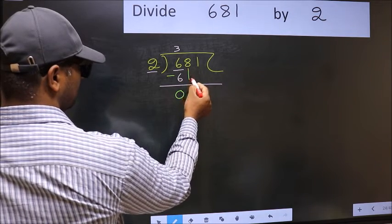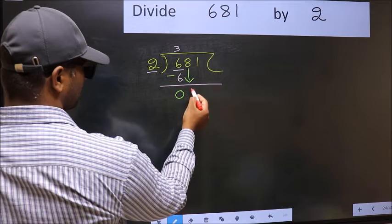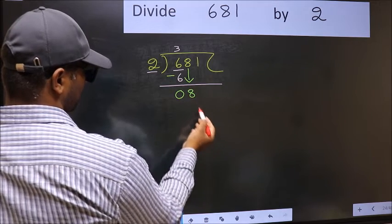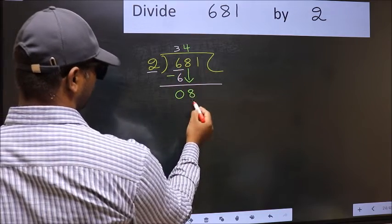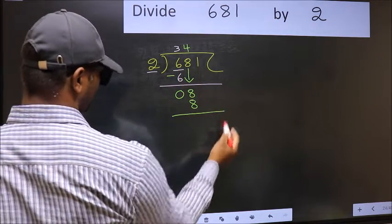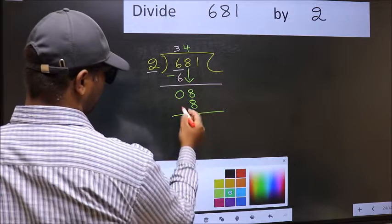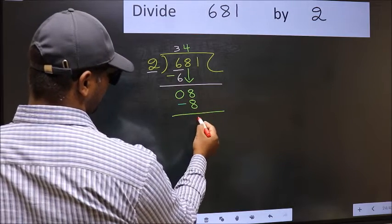After this, bring down the beside number. So, 8 down. Now, 8. When do we get 8 in 2 table? 2 fours, 8. Now, you should subtract. 8 minus 8, 0.